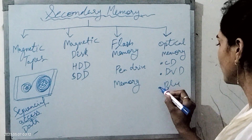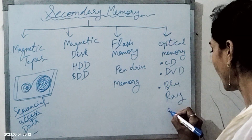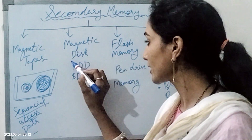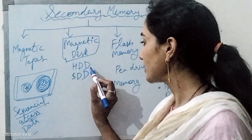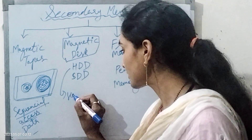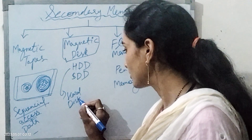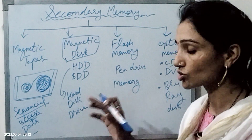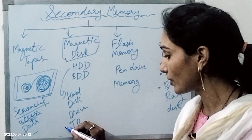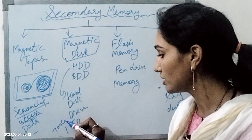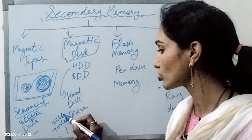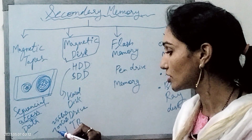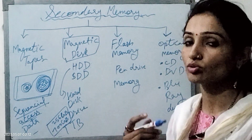CD, DVD, and Blu-ray disk. Coming to magnetic disk — there are two types inside: hard disk drive (HDD). The full form is hard disk drive. Hard disk storage is very large — storage is in terabytes. One terabyte, 700 GB, or 200 GB — we can store so much data.